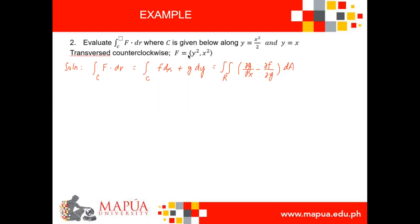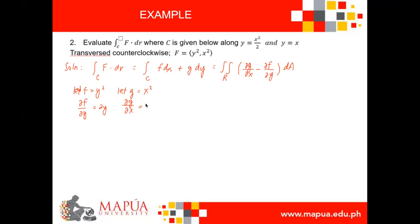Then let us find our functions f and g. Function g and function f can be found from the vector field given as (y squared, x squared). The first component, y squared, will be your f. So we let f equal to y squared, and the partial derivative of f with respect to y is 2y. The other component is our g, so let g equal to x squared. The partial derivative of g with respect to x is 2x.